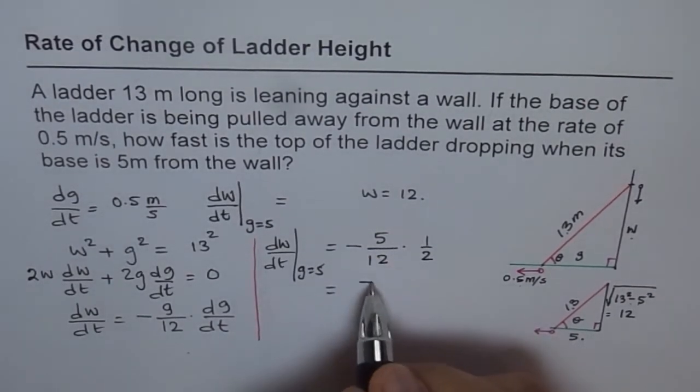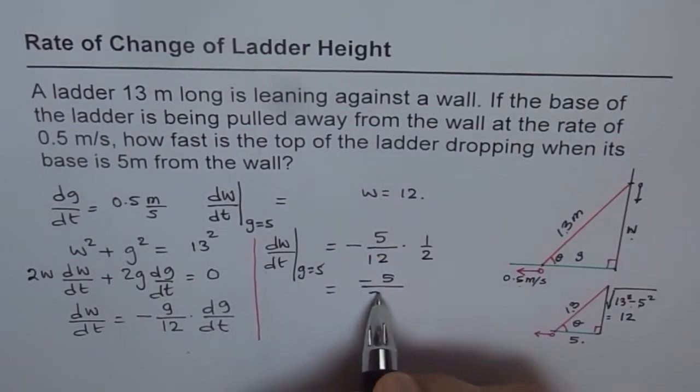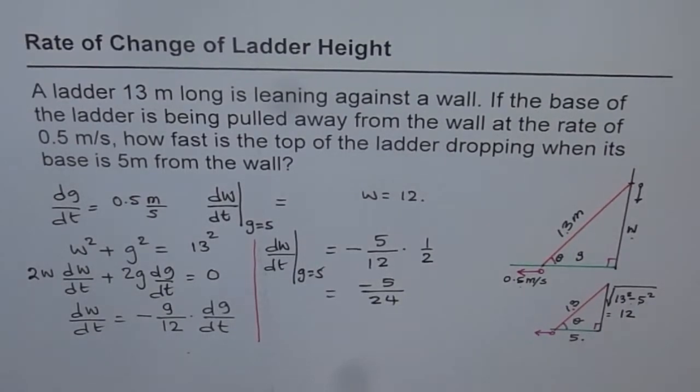And we get minus 5 over 24 as our answer. That is how we can quickly get our answer for such a problem.